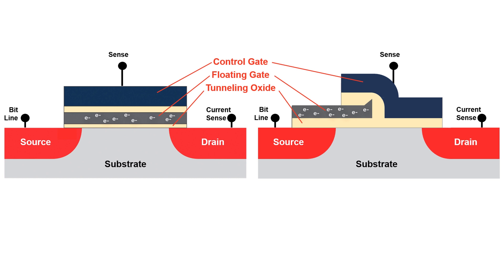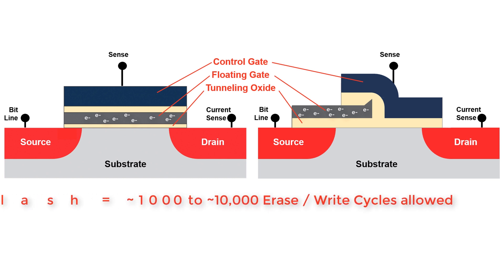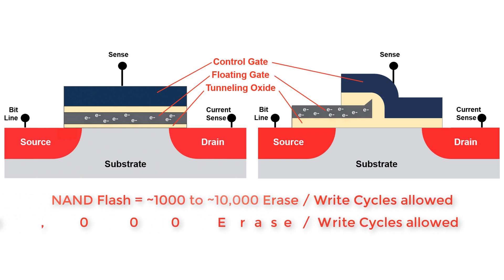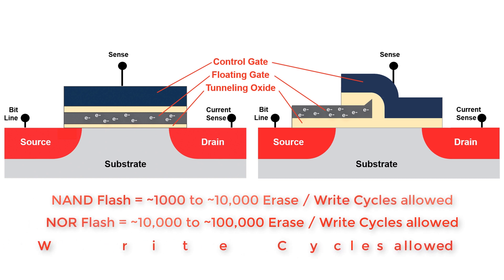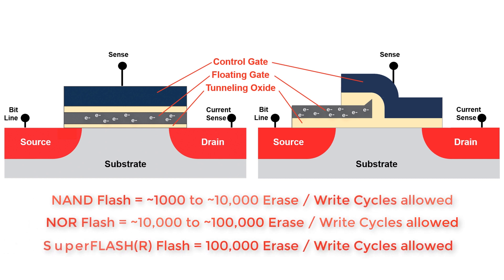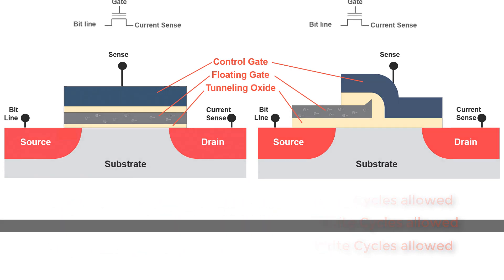One final note: pulling these electrons through the oxide is hard on the oxide and will damage it eventually. The newest NAND flash technologies will let you erase and rewrite your memory maybe a thousand times. NOR flash data sheets promise between 10,000 to 100,000 hot electron rewrites per cell before you may break the part and make the memory worthless. Super flash always promises a minimum of 100,000.